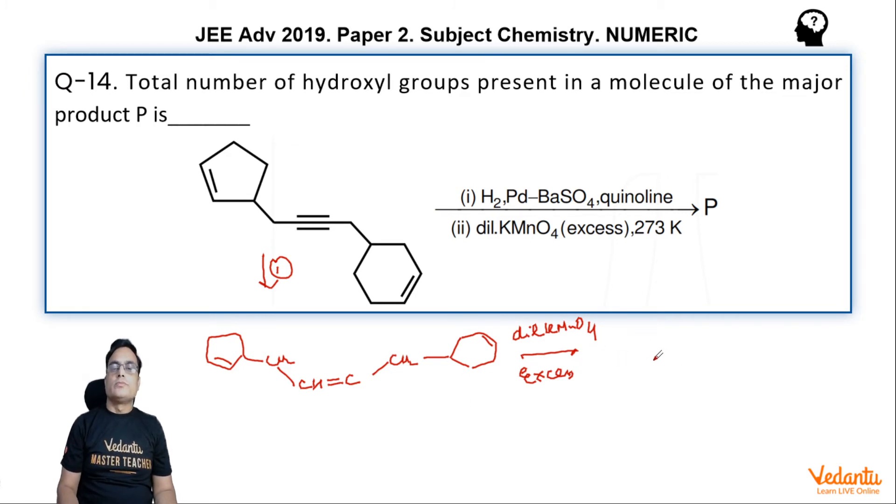So this is a double bond carbon, which will become single bond, and one OH on this carbon and one OH on this carbon because it is a syn addition. Then it becomes CH2.